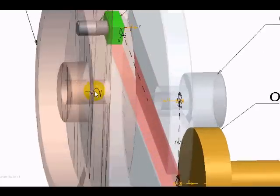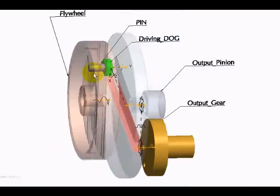The input is given to the flywheel. This is the motor connection with a constant velocity. The pin is fixed to the flywheel.